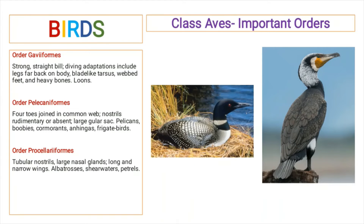Order Gaviiformes includes birds that have a strong straight bill. They are adapted for diving into the water, and the diving adaptations include legs that are far back on the body, a blade-like tarsus, webbed feet, and heavy bones. It includes loons.